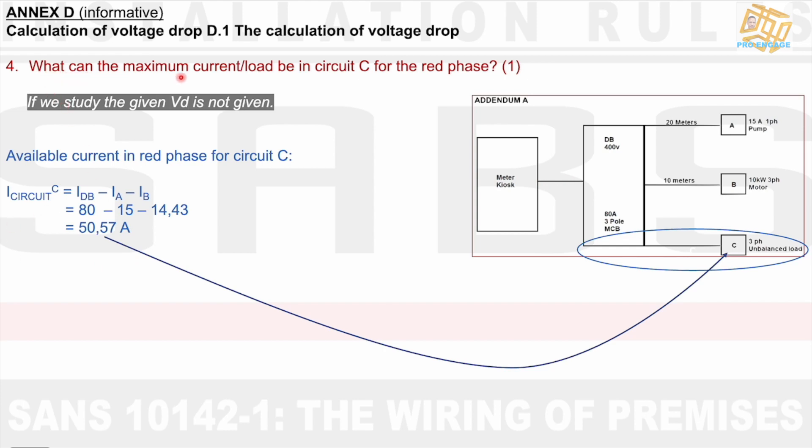Part 4 of this question, what can the maximum current load be in circuit C for that red phase? We can simply just say I circuit C equals I DB minus the current in circuit A minus the current in circuit B. And we found that in circuit A, the current was 15 amps. We found there. And the current in circuit B was that power there divided by 230, or sorry, 400 √3. And we got an answer of 14.43 amps. If we do this calculation, we get an answer of 50.57 amps. The current there in the three-phase unbalanced load is equal to 50.57 amps.